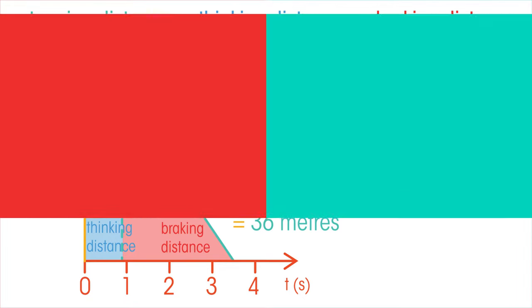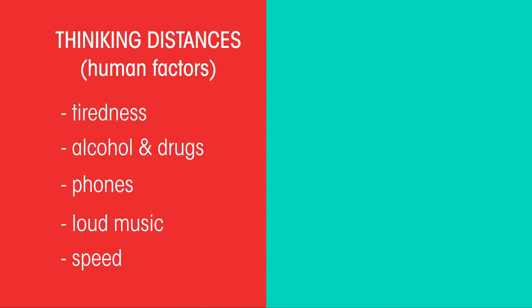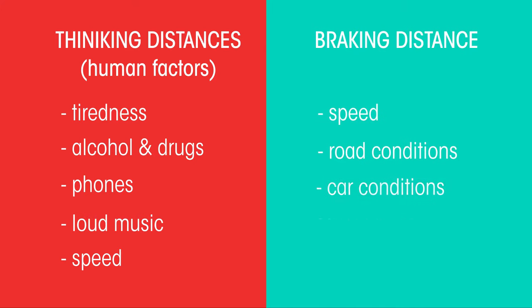So we've seen that thinking distances are affected by human factors, and braking distances by things like speed, weather, and load.